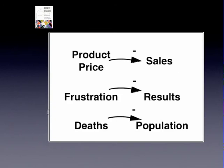Let's see another of his examples. If you decrease the product price, probably increase the sales. If you increase the frustrations, probably decrease the results. If you increase the deaths, probably the population will decrease.